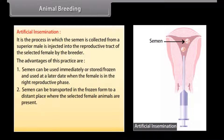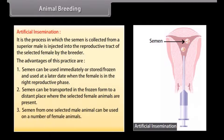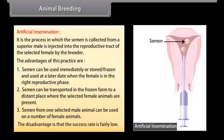Semen can be transported in frozen form to a distant place where the selected female animals are present. Semen from one selected male animal can be used on a number of female animals. The disadvantage is that the success rate is fairly low.